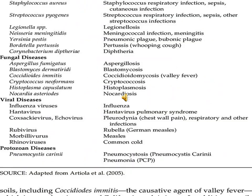This slide shows the causative organisms of airborne infections. Bacteria include Staphylococcus aureus, which can cause respiratory infections, sepsis, and skin infections. Streptococcus pyogenes can cause respiratory infections and sepsis. Neisseria meningitidis can cause meningococcal meningitis. Bordetella pertussis can cause pertussis. Yersinia pestis can cause pneumonic and bubonic plague. Corynebacterium diphtheriae causes diphtheria.